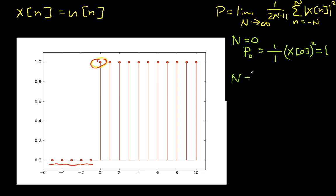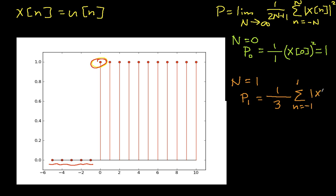When cap N is equal to 1, P1 is 1 over (2·1 + 1), so 1 over 3. This is the summation of little n going from minus 1 up to 1 of |x(n)|². When little n is minus 1, this term is 0. When little n is 0 or 1, this term is 1² = 1. So I have 1 plus 1, which gives me 2 thirds.